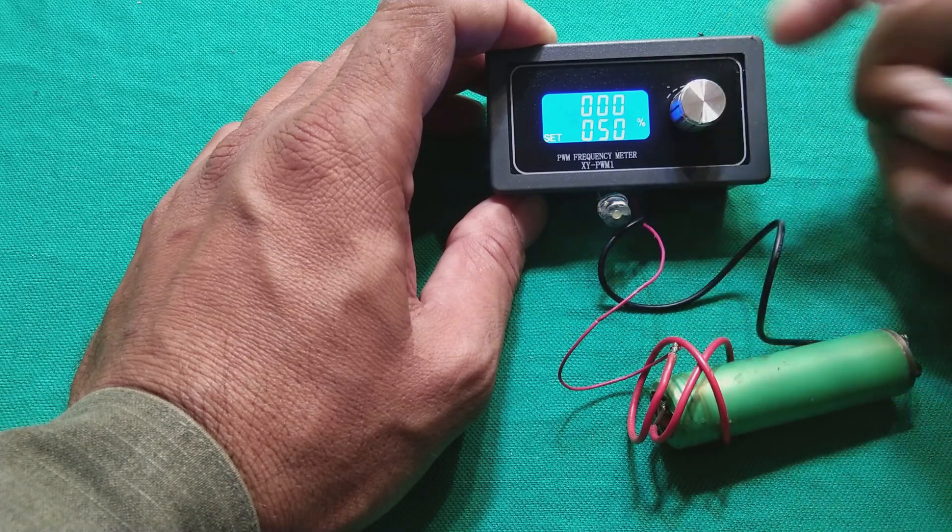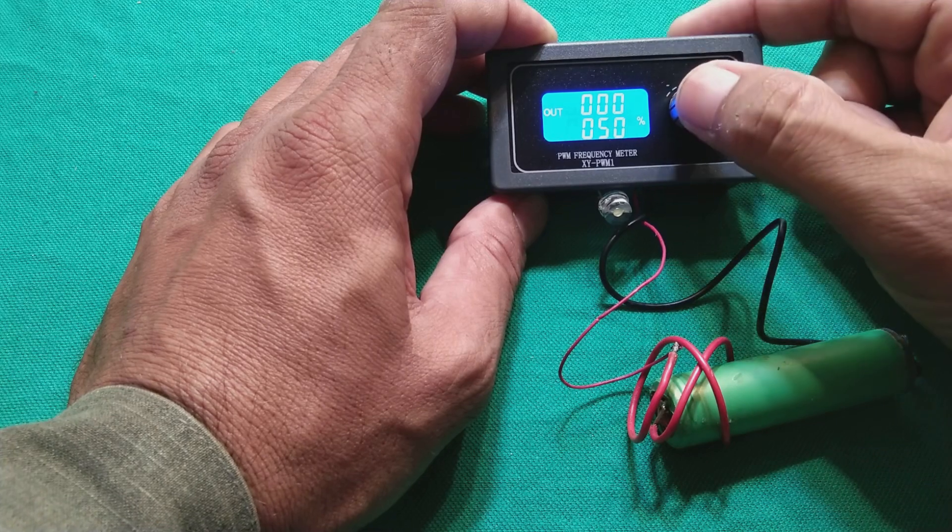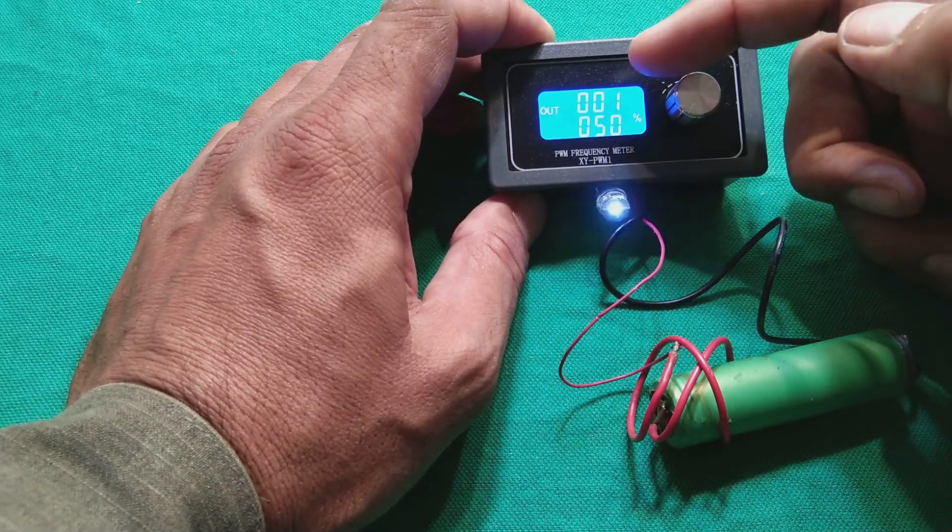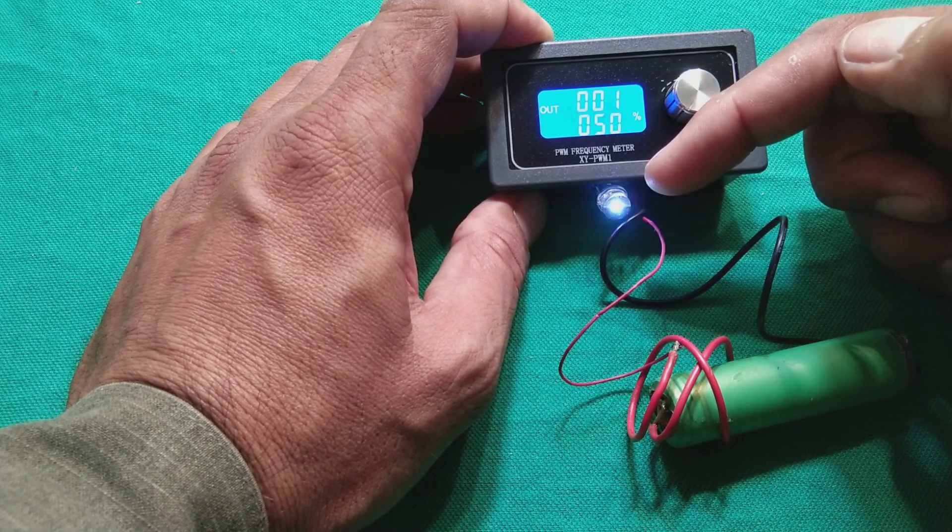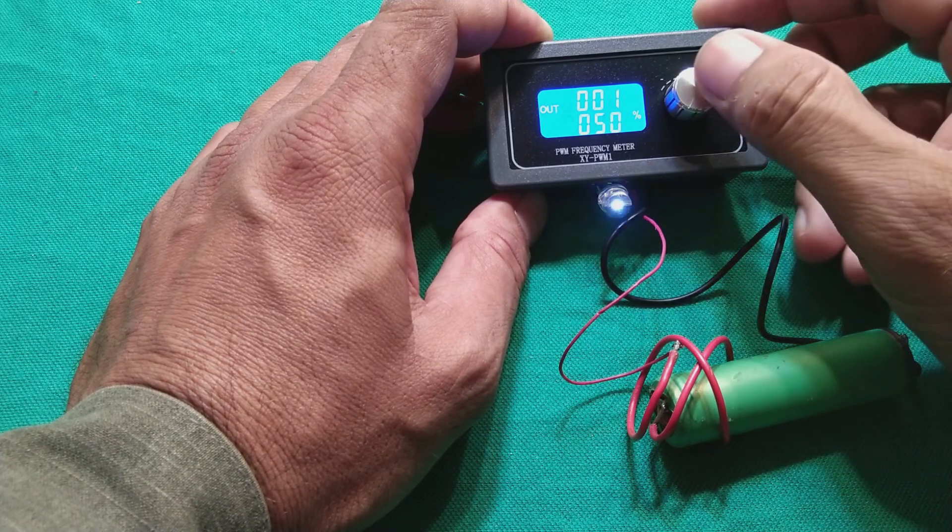If we reduce it down to 0, this 0 means off. Now we can change this frequency to 1 Hertz. 1 Hertz means once in a second. So this LED is blowing once in a second you can see. This is going once in a second and also the duty cycle we can change.